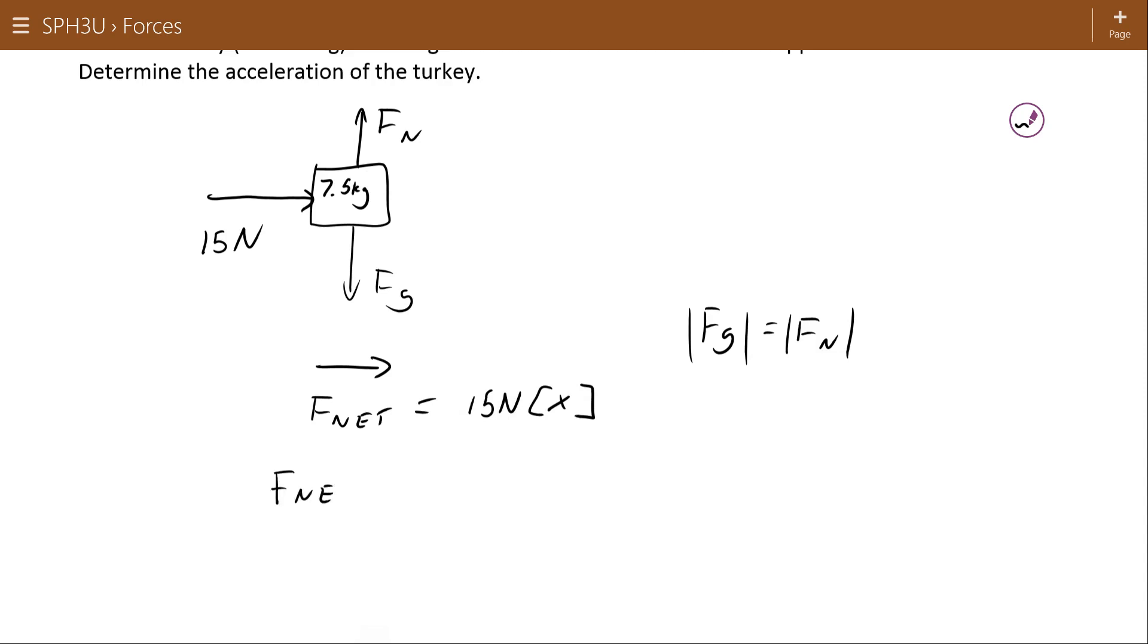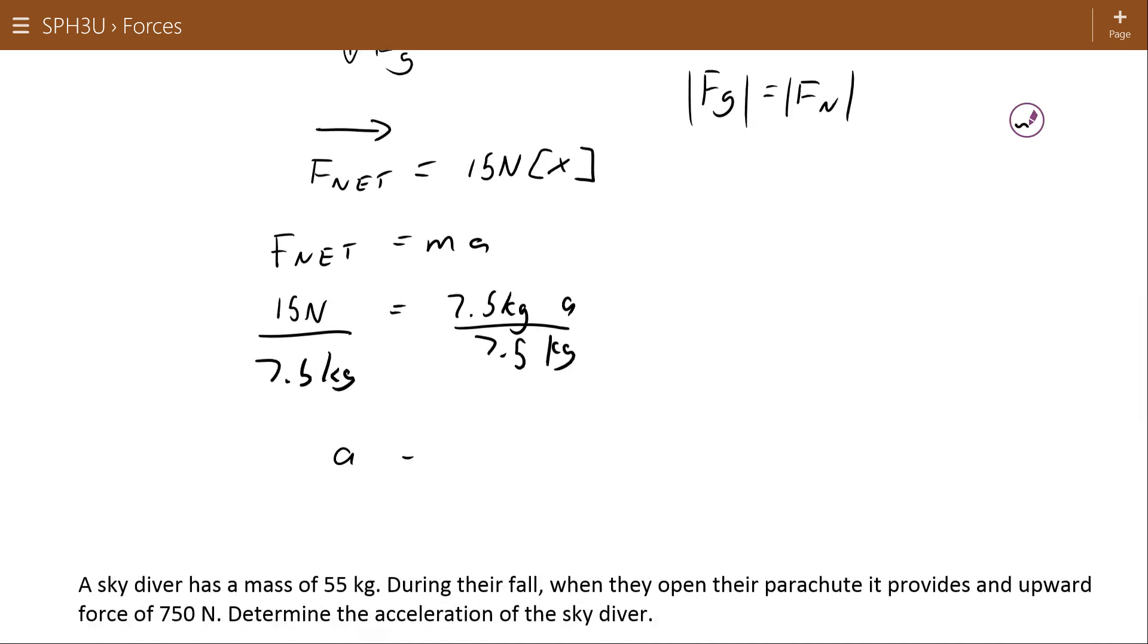Newton's second law says F net is equal to M A. So 15 Newtons is equal to 7.5 kilograms A. And if we divide both sides by 7.5, then we will get the acceleration of our turkey is 2 meters per second squared. It's always nice to put a box around your answer.